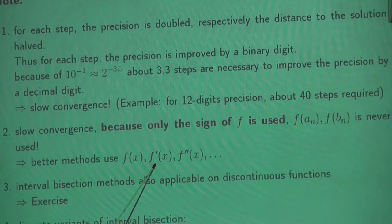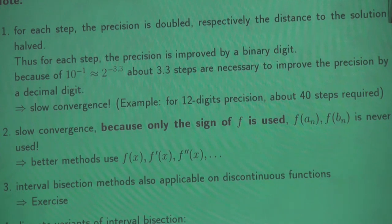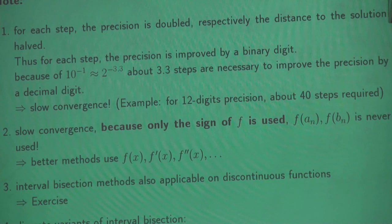We don't use the information about the function value — how far am I away from the axis. We also don't use the first or second derivative. The first derivative tells us how fast it goes towards the root. But the good news is the interval bisection method is a very stable method. The only assumption is the function has to be continuous. Other methods have strong requirements on differentiability and higher-order derivatives.